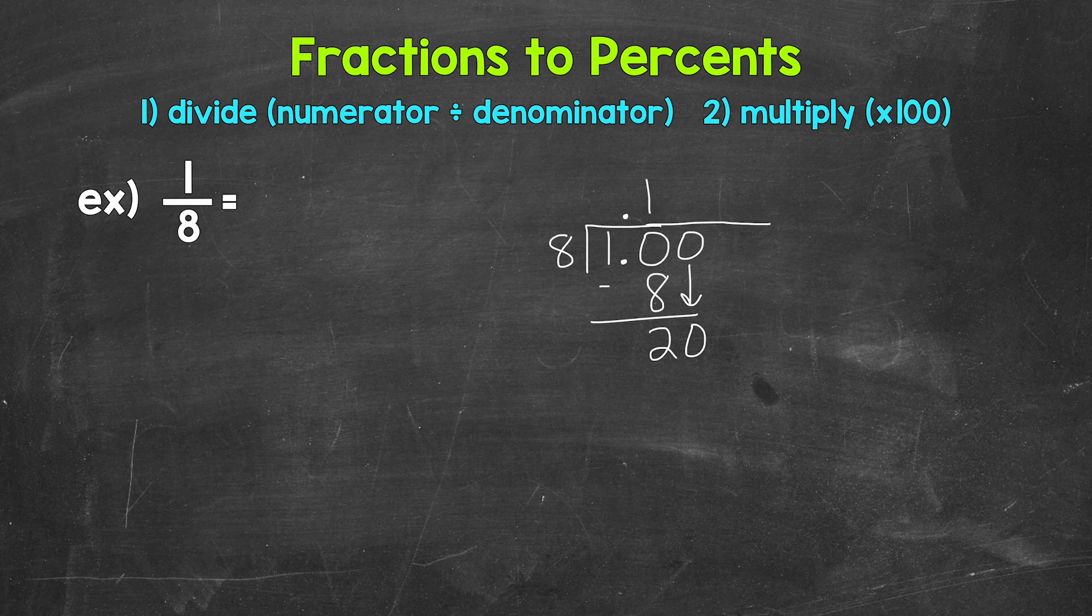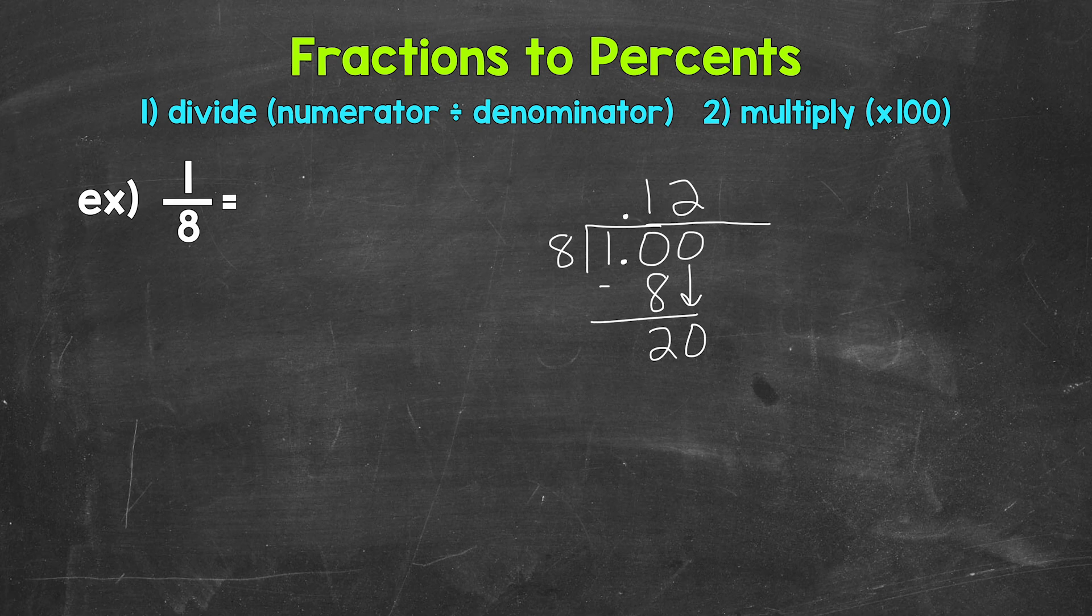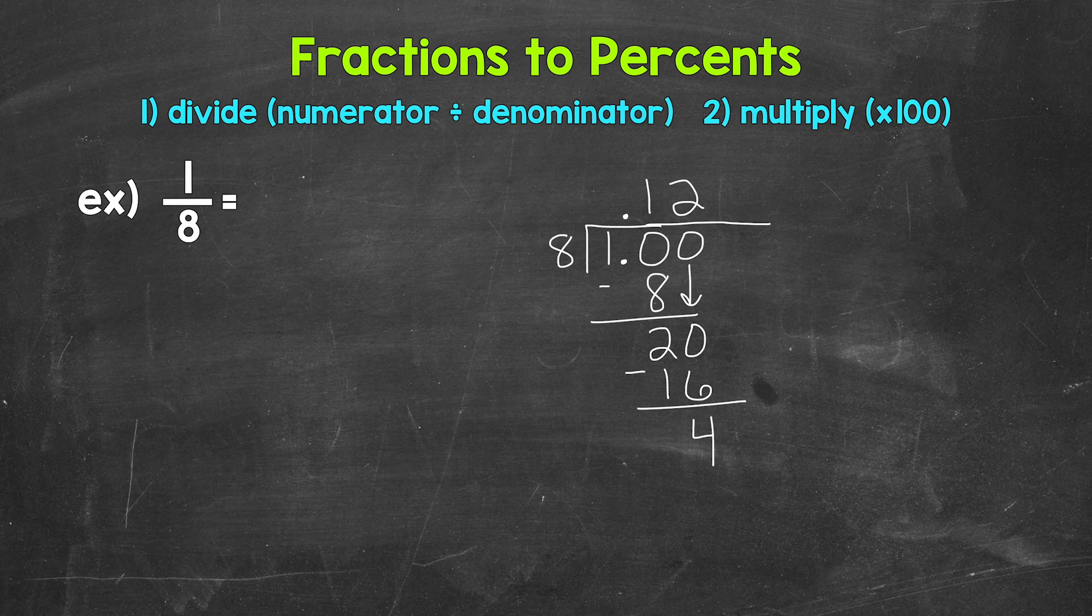20 divided by 8. How many whole groups of 8 in 20? How many 8's in 20? Well, 2. That gets us to 16. Multiply. 2 times 8 is 16. Subtract. 20 minus 16 is 4.